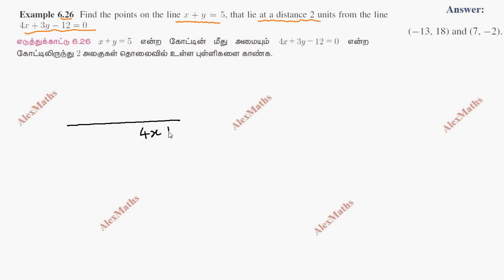This line is 4x plus 3y minus 12 equals 0.